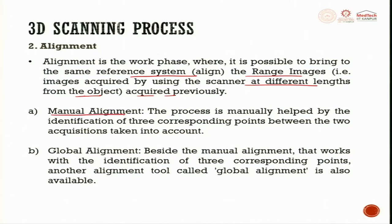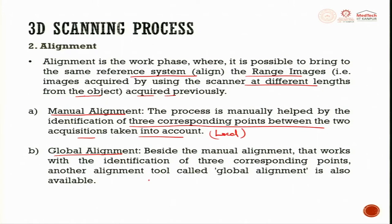Alignment could be manual or global. Manual alignment is the process in which manual identification of three corresponding points between two acquisitions is taken into account. Global alignment is also available and is advised to run after having manually aligned the range images. In this way, alignment of each acquisition is optimized with respect to others — manual is local application, and global alignment connects the overall model and all small components together.